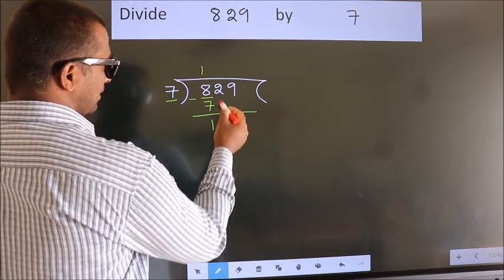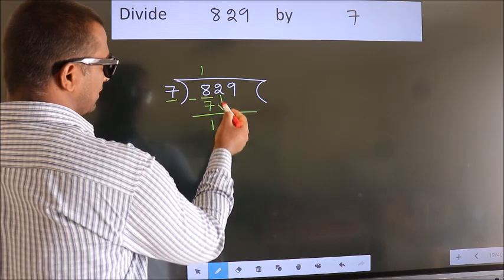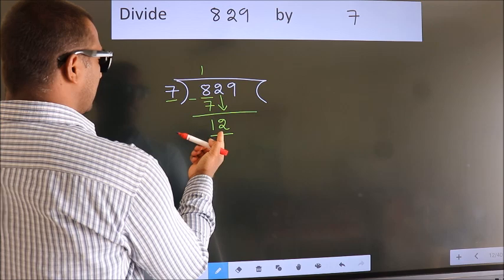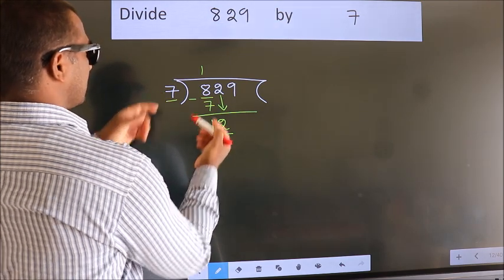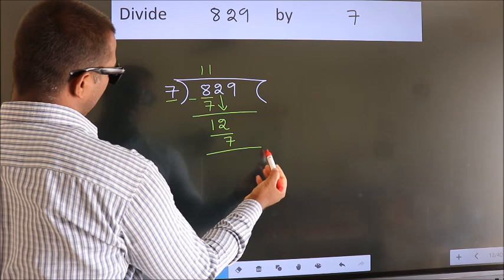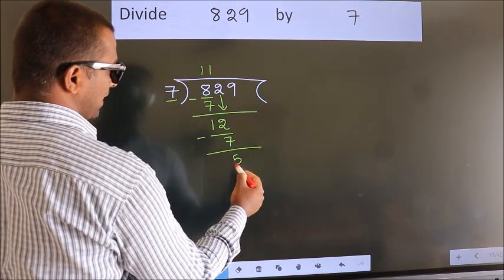After this, bring down the next number. So 2 down, giving us 12. A number close to 12 in the 7 table is 7 once, which is 7. Now we subtract. We get 5.